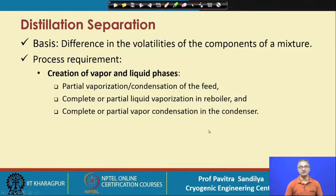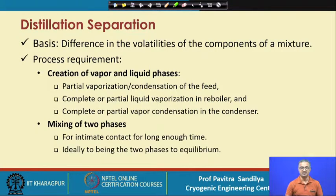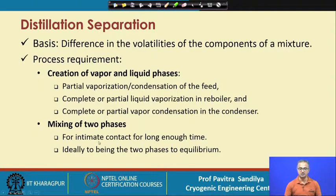We shall learn about the reboiler and condenser a bit later. After creating the two phases, we have to ensure that the two phases come to very intimate contact for long enough time, so that all the components — the more volatile ones — have a chance to go to the vapor phase preferentially, and the higher boiling point components have time to come to the liquid phase preferentially. These phases have to be contacted intimately for long enough time to effect the separation.